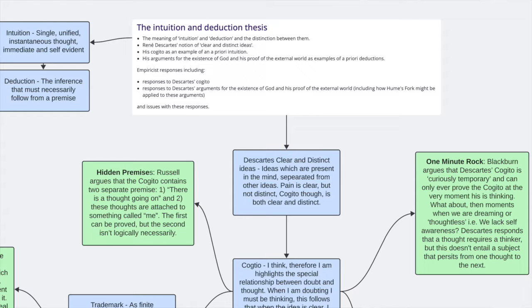One, there is a thought going on. When you think of Cogito there is a thought going on, true, fine. But the second premise is that these thoughts are attached to something called me, to the self. And the first can be proved but the second isn't logically necessary.